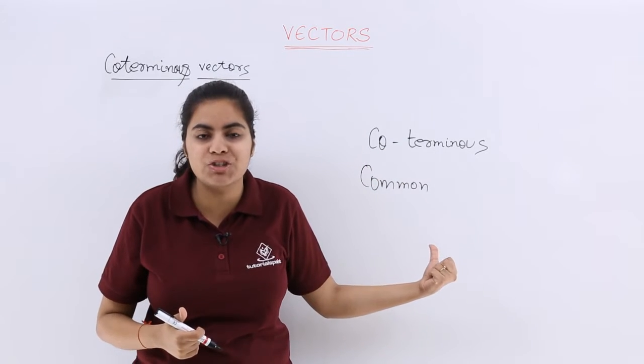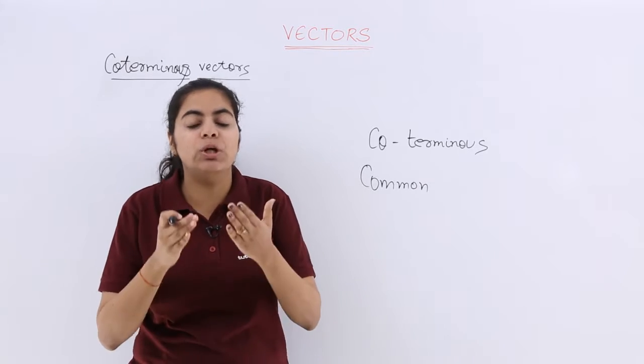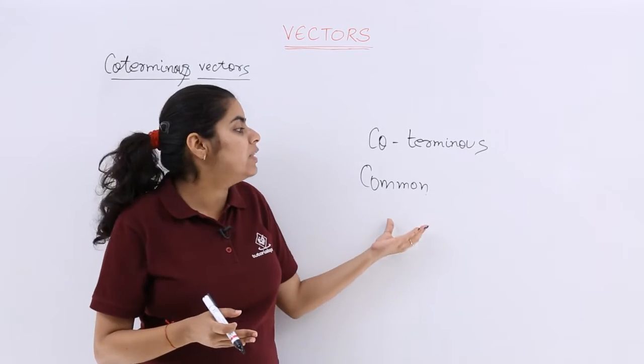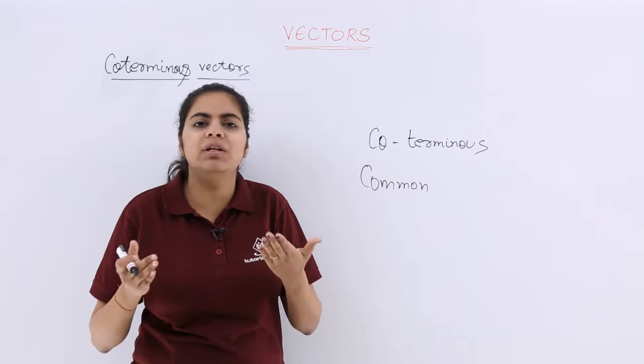So now can you form the definition? Yes. Two or more vectors are said to be coterminous vectors if they have the common terminal point.